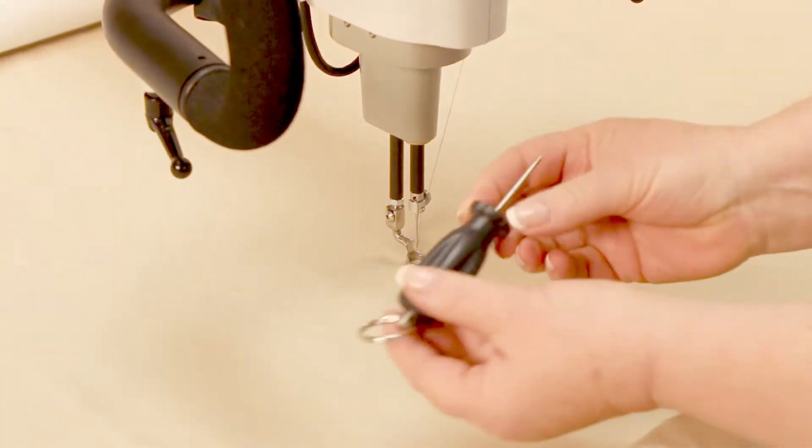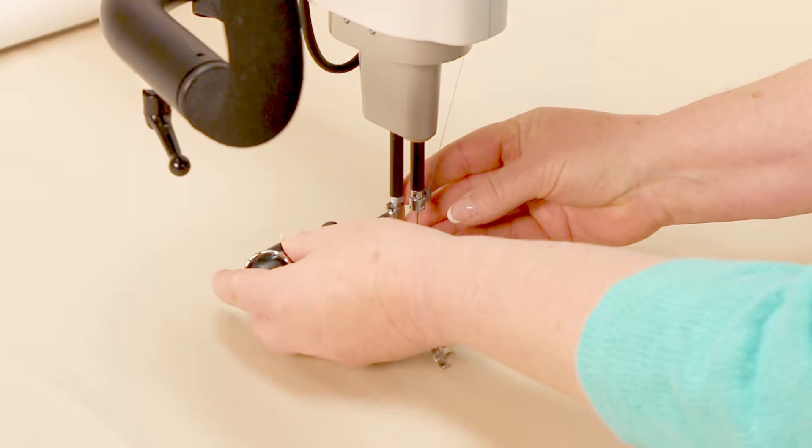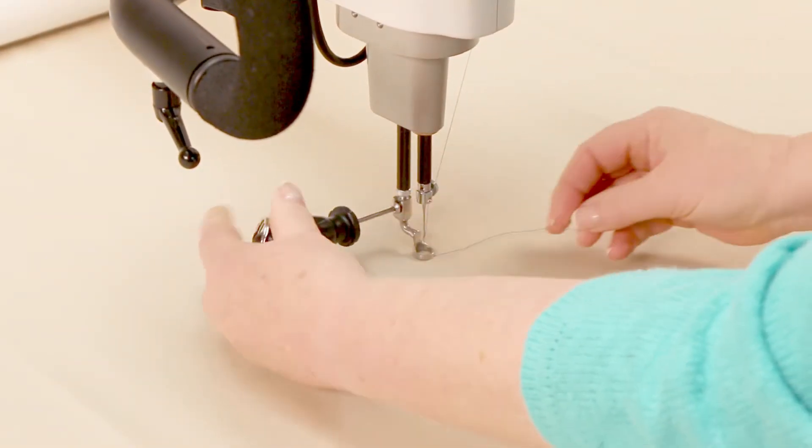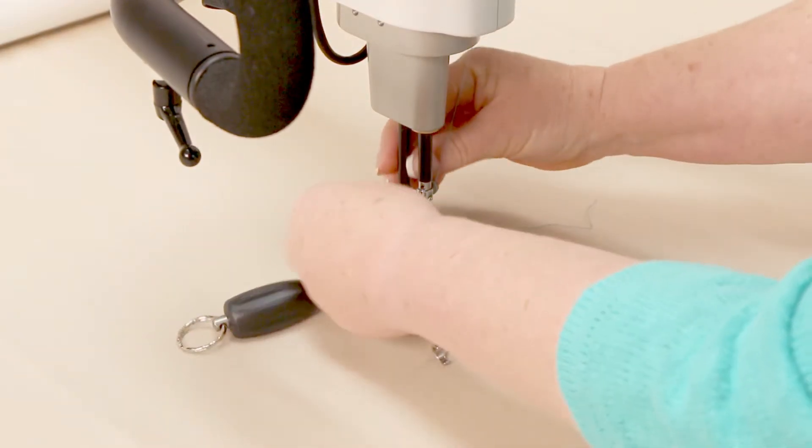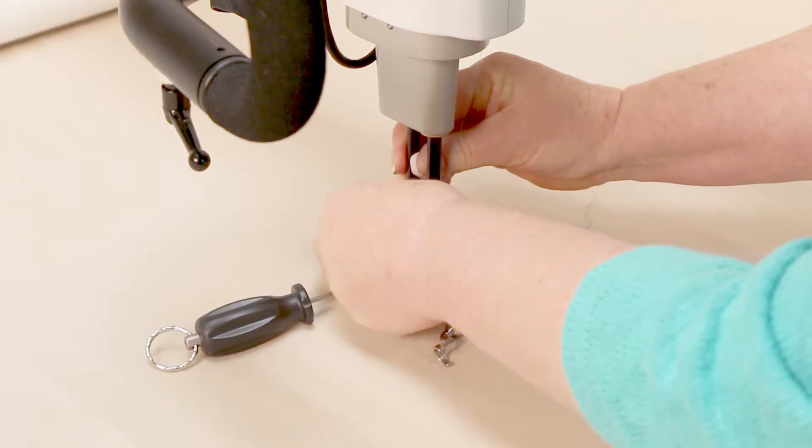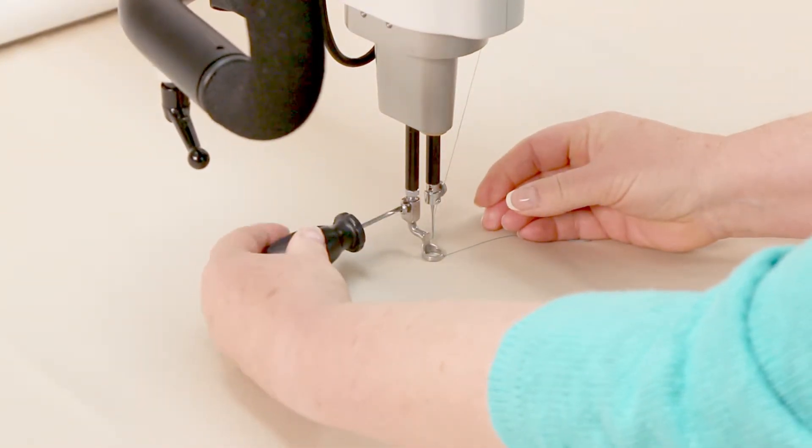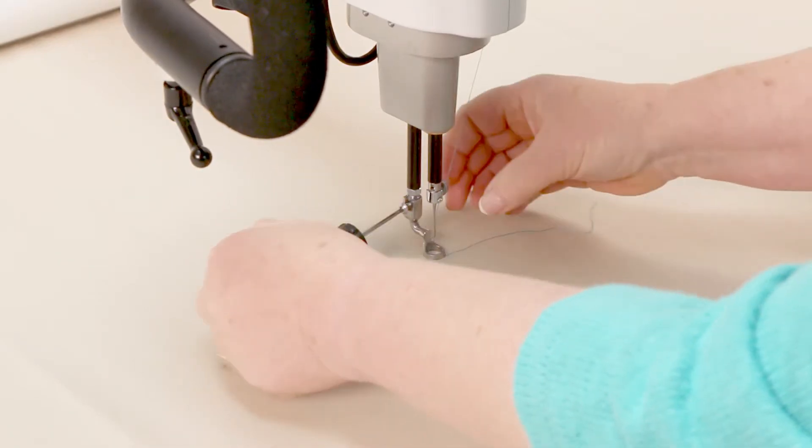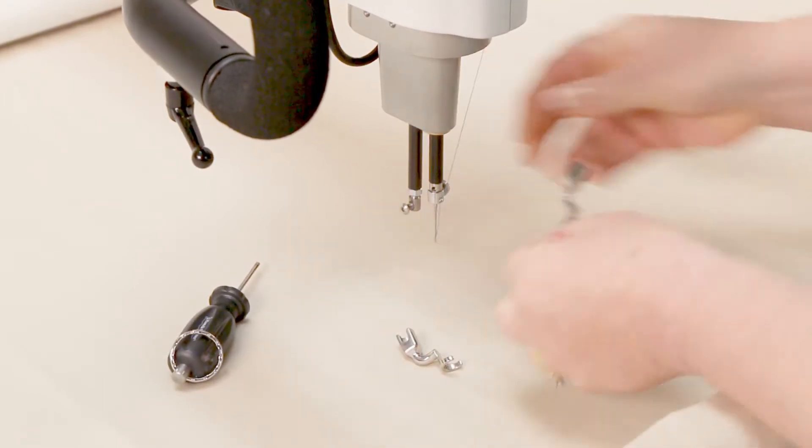Then using the 2.5 screwdriver, we're going to loosen the screw, and you're going to turn that enough that the foot will become loose. Then lift up that foot. If it's not coming off, that means I haven't unscrewed it enough, and then it'll come off.